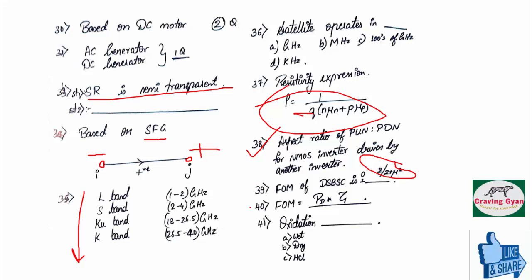And what do you mean by figure of merit? The figure of merit is the product of power dissipation multiplied by propagation delay.